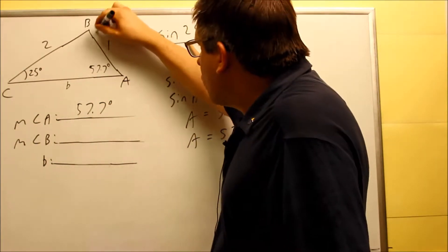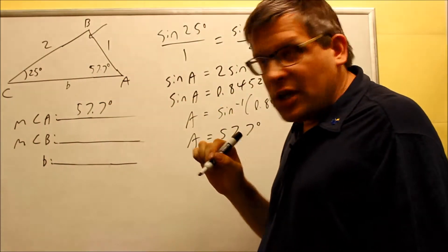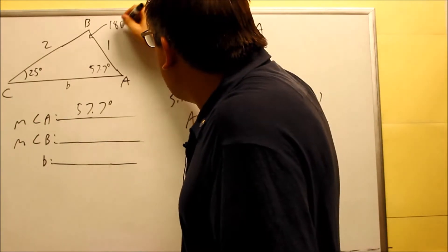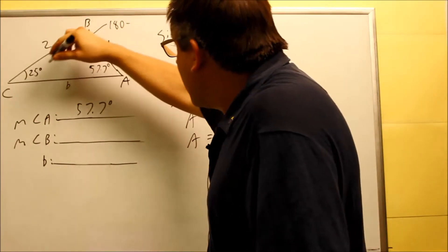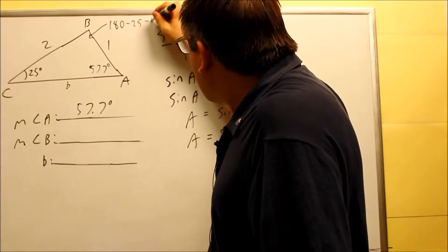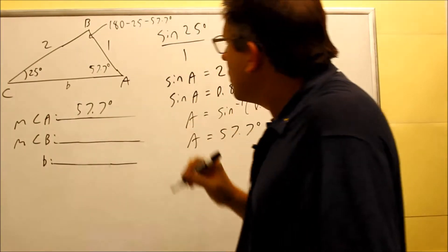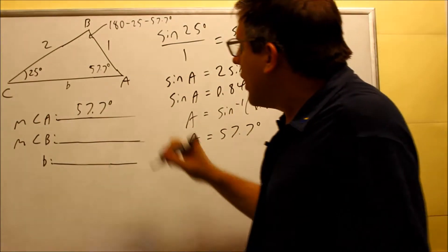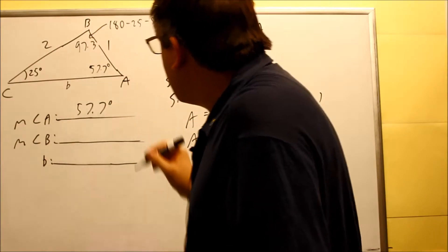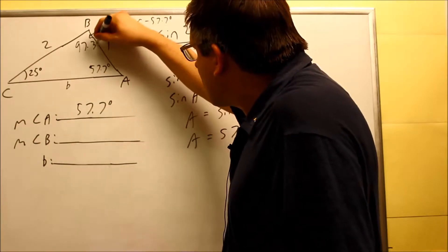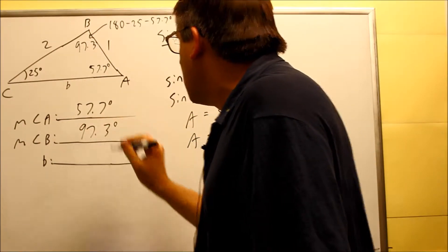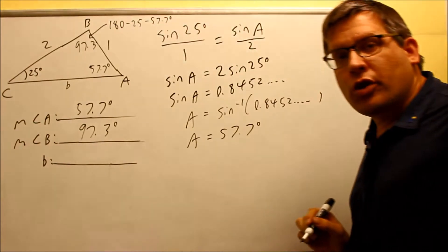Now we want to solve for angle B. We do 180 minus the two angles already in the triangle: 180 minus 25 minus 57.7 degrees. That gives us 97.3 degrees left over — so that's angle B, 97.3 degrees.